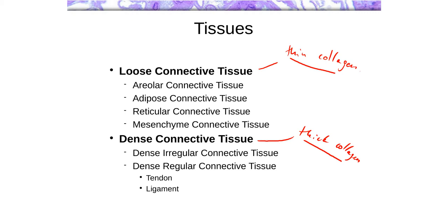Once we have this categorization, we can subdivide things. When we look at loose connective tissues, we have loose areolar connective tissue, adipose connective tissue, reticular connective tissue, and mesenchyme connective tissue. Mesenchyme is very early in development, with very little ECM and just a bunch of mesenchyme cells — so there's not much there.